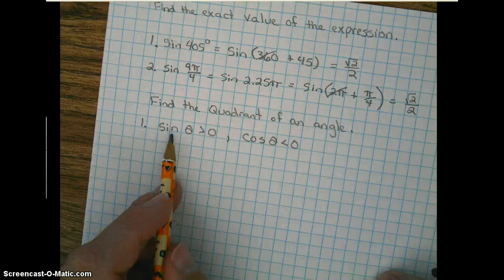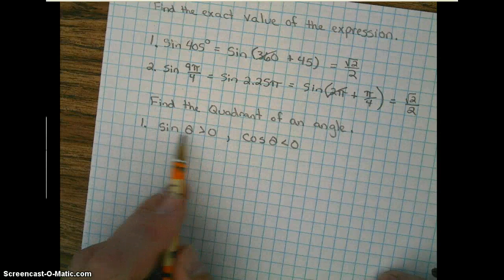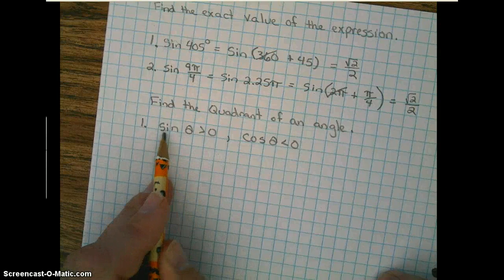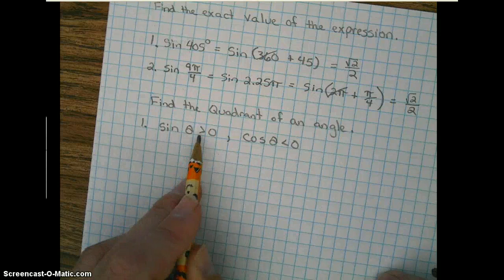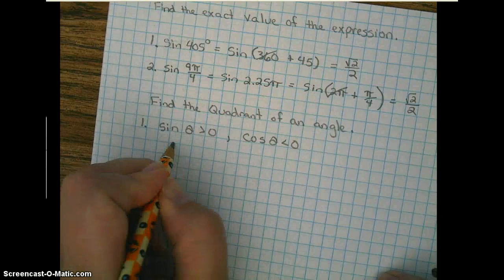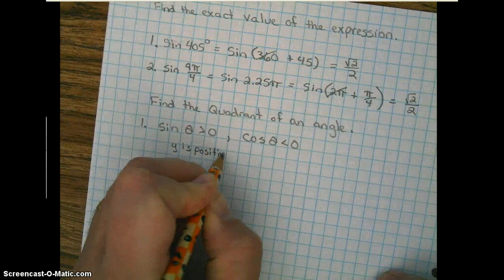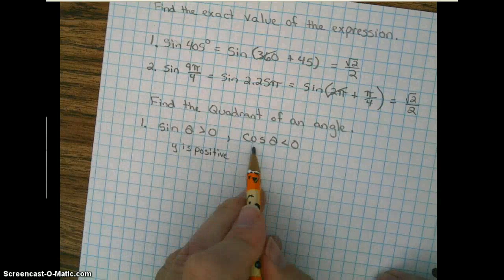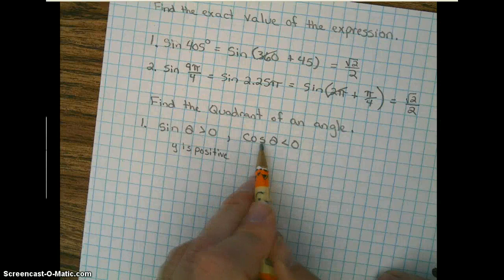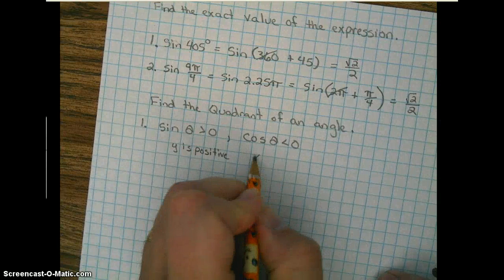Well, if you remember by definition, the sine of theta on a unit circle represents the y coordinate. And we're looking for where y is greater than 0, so y is positive. The definition of cosine of theta on a unit circle is x. So we're looking for where x is less than 0, so we're looking for where x is negative.